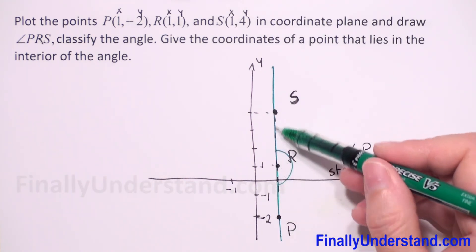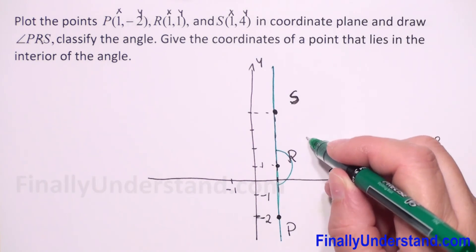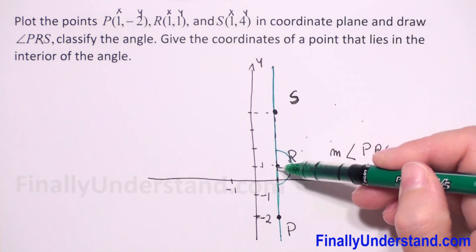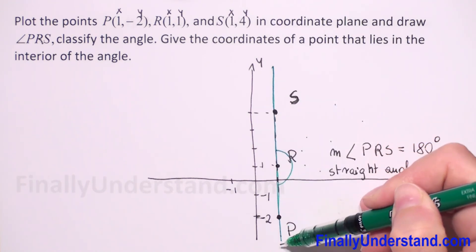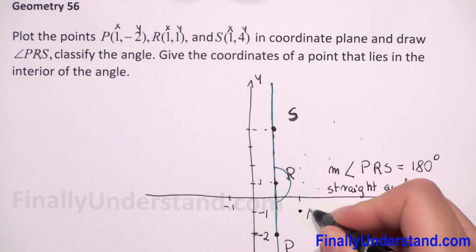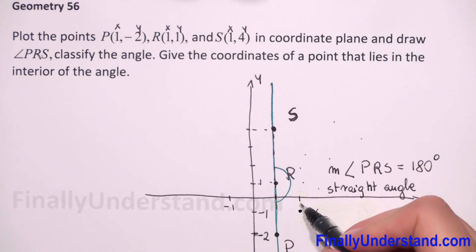You can choose any point which is between these two sides. So for example, let's choose A, which has first coordinate two and second coordinate negative one. This is our example of an interior point. This is my solution.